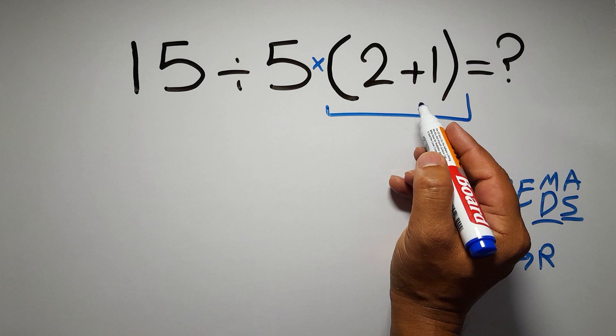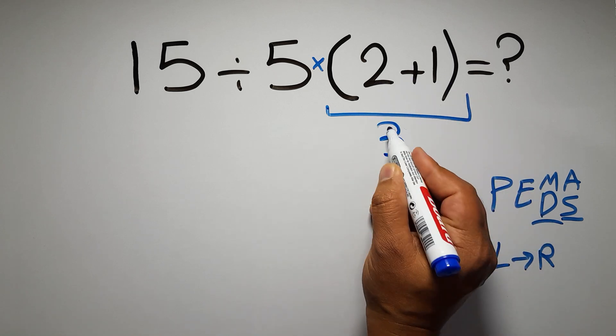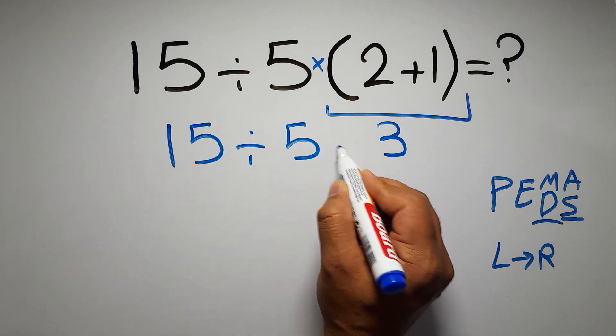So first these parentheses, inside these parentheses, we have 2 plus 1, which equals 3, so 15 divided by 5 times 3.